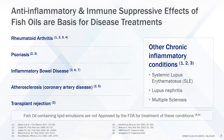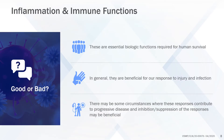Anti-inflammatory and immune-suppressive effects of fish oils, high in DHA and EPA, form the basis for treatment of patients with chronic inflammatory diseases such as rheumatoid arthritis, psoriasis, inflammatory bowel disease, atherosclerosis, and systemic lupus.